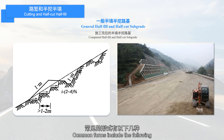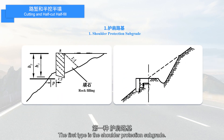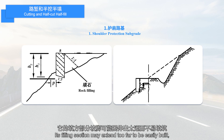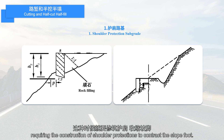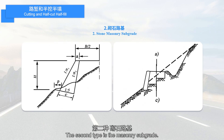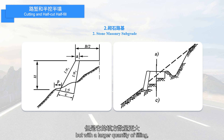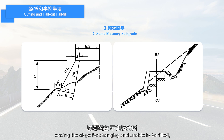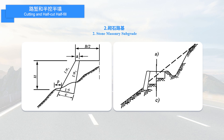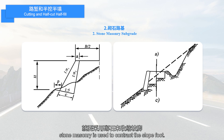This is a completed half-cut and half-fill subgrade. Common forms include the following. The first type is the shoulder protection subgrade. Its filling section may extend too far to be easily built with a thinner soil body, requiring the construction of shoulder protections to contract the slope foot. The second type is the masonry subgrade, similar to shoulder protection subgrade but with a larger quantity of filling. When the slope extends further out or even does not intersect the ground, leaving the slope foot hanging and unable to be filled, stone masonry is used to contract the slope foot.